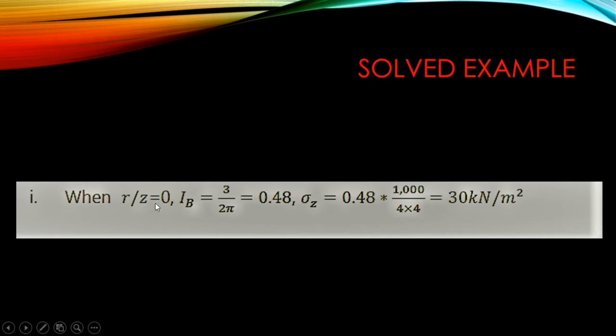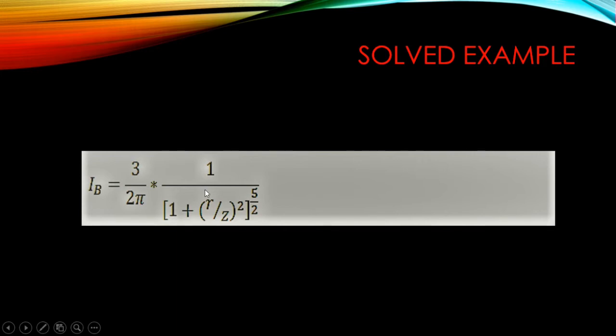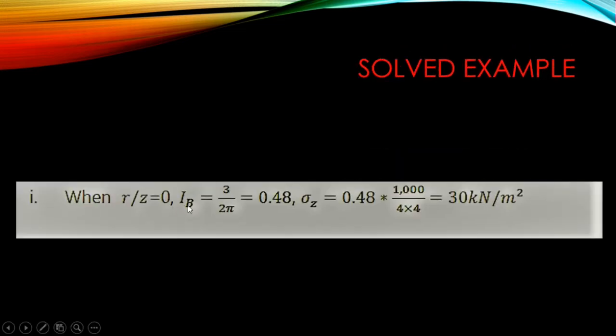For Part A, the concentrated load is applied at the pavement surface and we want the pressure at four meters directly below the load. Since we are directly below the load, the horizontal distance r is zero. So r divided by c equals zero divided by four, which equals zero. Substituting into the Ib equation, everything with r drops out, leaving Ib = 3 over 2π.